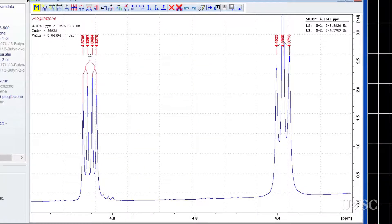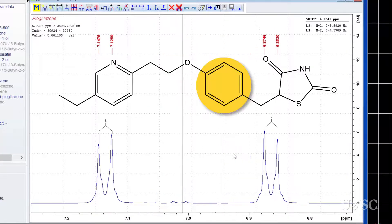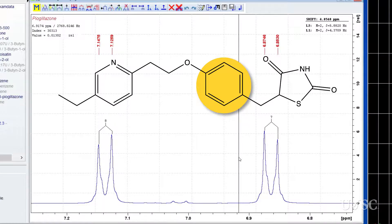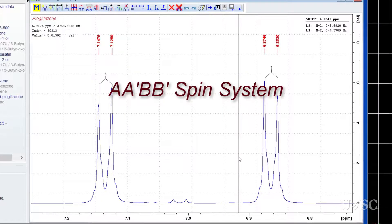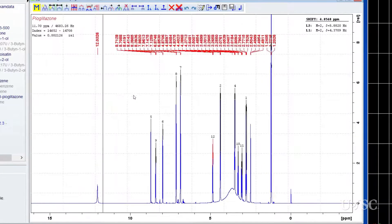Moving to the aromatic region we see these two oddly shaped doublets. This is a classic example of a 1-4, or para-substituted benzene ring. Technically these multiplets are a second order splitting pattern called A, A', B, B' spin system. For this analysis we will ignore this fact and just accept the simple doublets defined by the multiplet analysis routine.